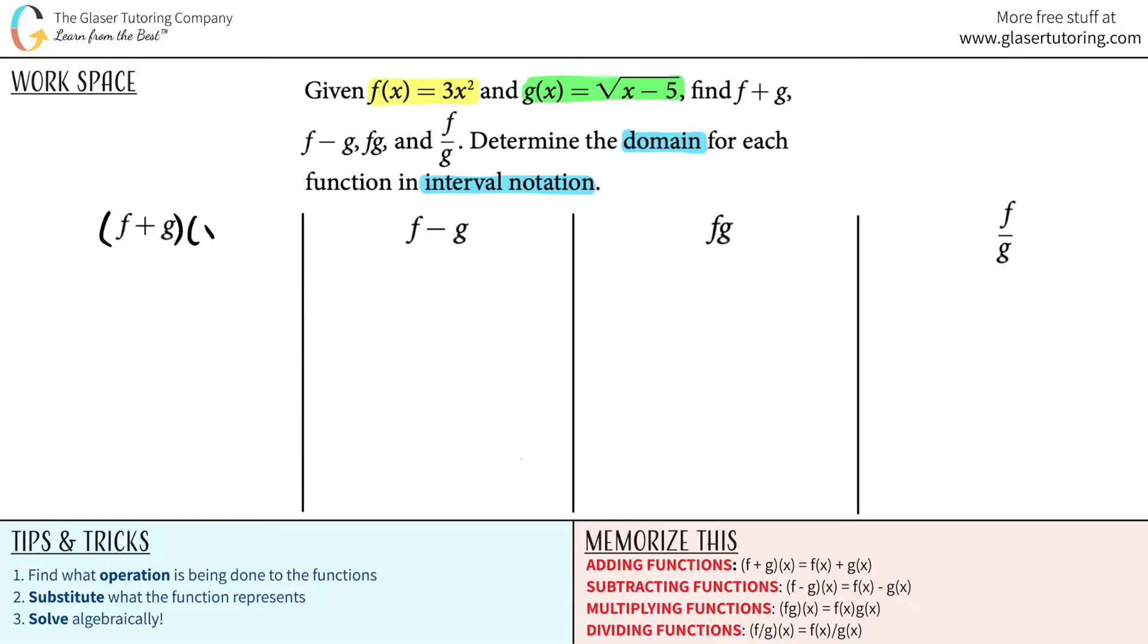This notation, f plus g of x, is the same thing as saying f of x plus g of x. Now I know what f of x is clearly, and I know what g of x is, so I can just plug them in. f of x was 3x squared, so 3x squared plus, and now what was g of x? It's rad x minus 5.